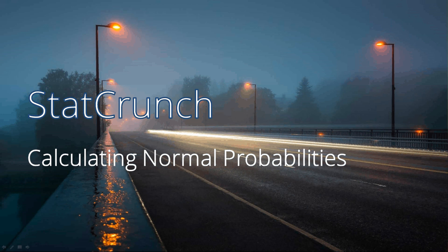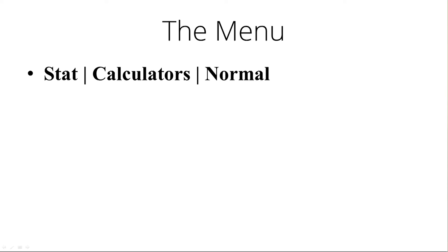Hello, this quick little video is to show you how to calculate probabilities from a normal distribution using StatCrunch. Basically, you're going to go to the menu, select Stat, scroll down to get to Calculators, and select Normal.